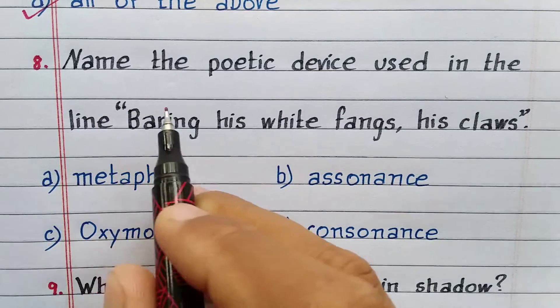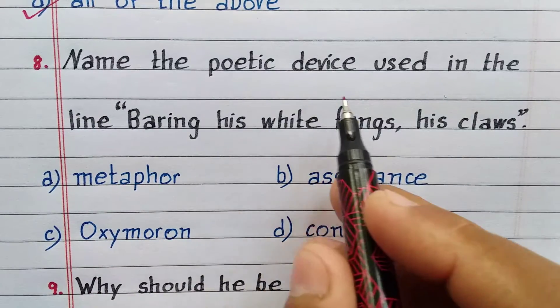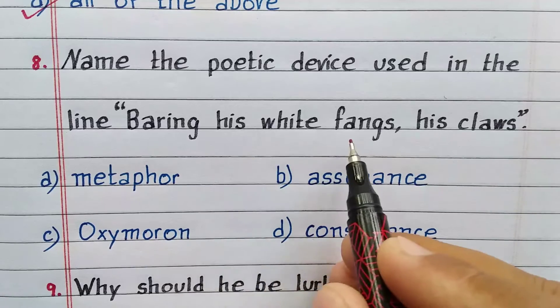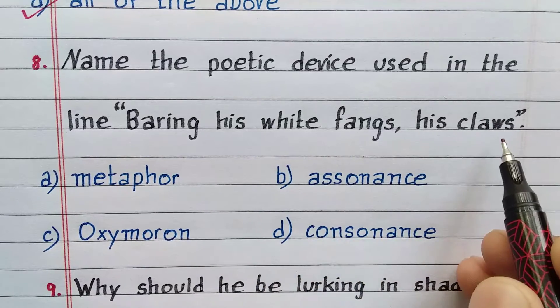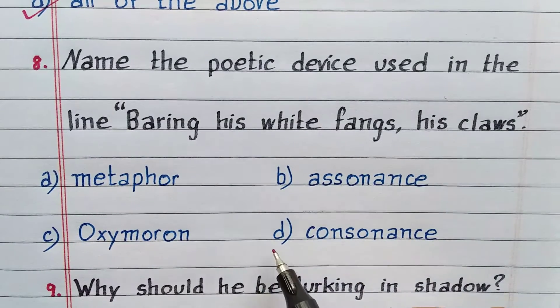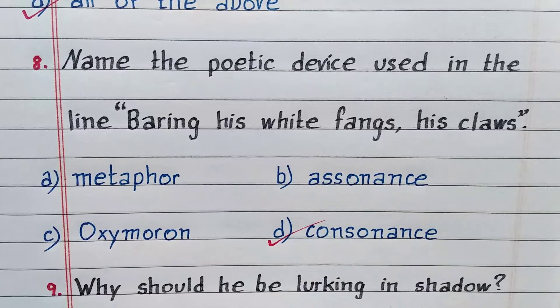Name the poetic device used in the line 'bearing his white fangs, his claws.' Option D. Consonance.